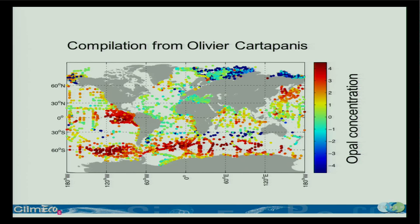Work done in Eric's lab — Olivier Catapano extracted and published sediment data. That's Opal concentration. They went back to databases, extracted the data, quality-checked them, and had to adjust for age models for their core data. So again, that's another example of grassroots initiatives — people who need a specific data product and go through the huge effort to create it. The important thing is that these data products get published so that they are available to others.